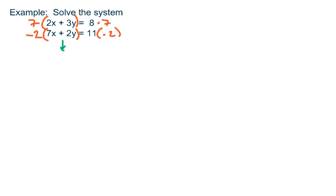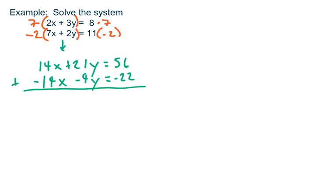So rewriting the equations, the top one becomes 14x plus 21y. 7 times 8 is 56. Negative 2 times 7x is negative 14x, minus 4y equals negative 22. So that's nice. You see here that if I were to add down the equations, the 14x minus 14x would give me a 0. 21y minus 4y would give me 17y, which isn't too bad. And 56 minus 22 would give me 34. Divide both sides by 17 because I now just have an equation in one variable. And y is 2.